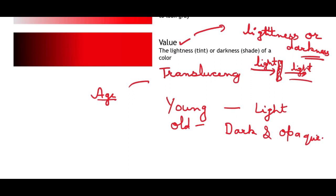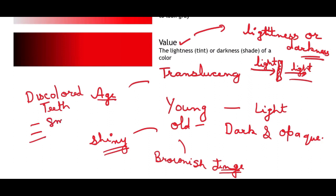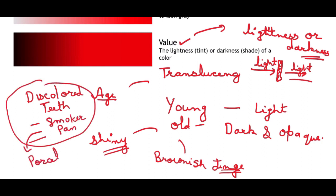Factors affecting tooth appearance and color selection: with aging, teeth look shinier due to regular wear resulting in a smooth appearance. Brownish tinge and discoloration occur due to exposed dentine staining over time. Habits like smoking, alcohol consumption, and pan chewing cause tooth discoloration due to stains, so porcelain teeth are preferred for individuals with such habits.